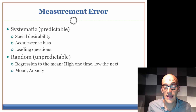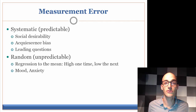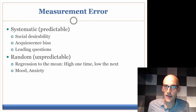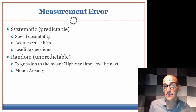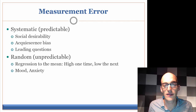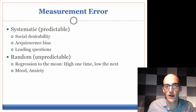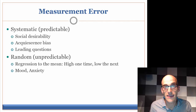Measurement error that is a little bit less predictable is random measurement error, which is going to be built into all measurement tools to some degree. These are a little bit harder to deal with, especially if you're working one-on-one with clients or doing a single system design. The first random measurement error the text discusses is regression to the mean. If someone scored really high at one time, they may score lower the next time because they're no longer in the situation that caused them to score so high initially.